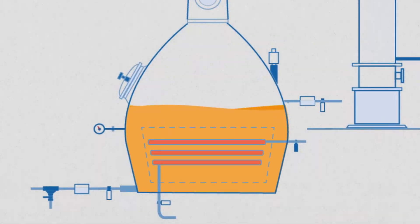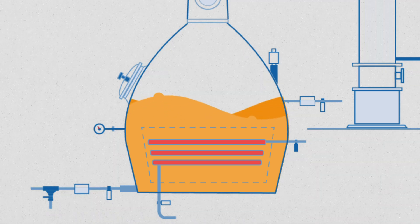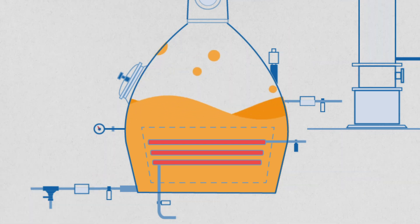When the still is full and the man door's closed, we'll turn on the heat. As the wash is heated to a boil, we have the more volatile components of the wash rising up first. The wash is made up of many different components, some of them more volatile than others.